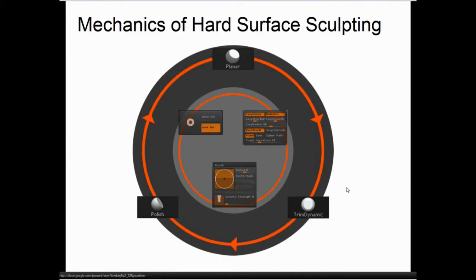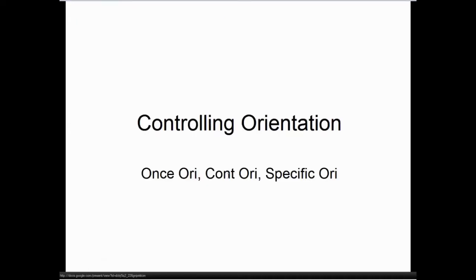Now let's take a look at the hard surface sculpting system in ZBrush. This is really run by three brushes and three features — that's the easiest way to look at it. The primary brushes are the planar brush, the trim brush, and the polish brush. The features are the orientation feature, the backtrack feature, and the depth feature. We're going to look at all of those in turn, starting with orientation.